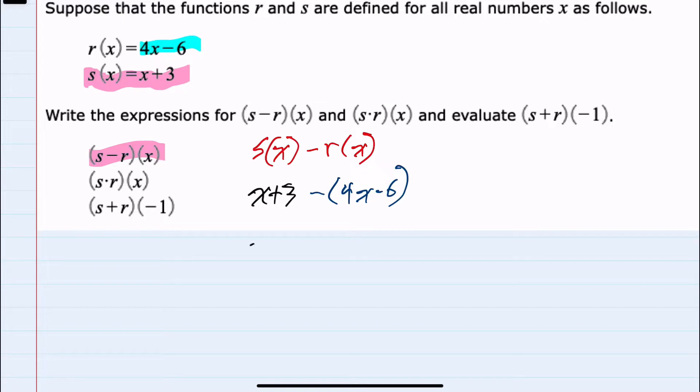I can now simplify by distributing that negative to be a negative 4x, and then a negative times a minus 6 would be a plus 6.